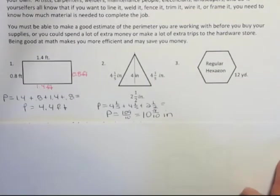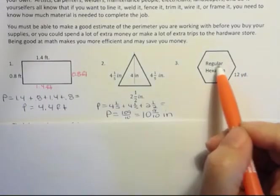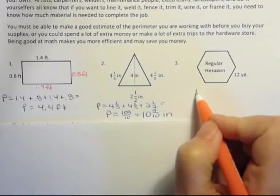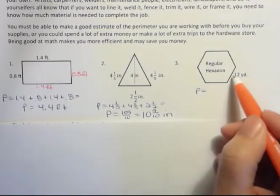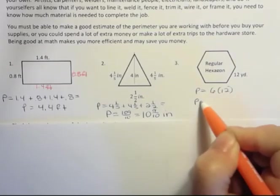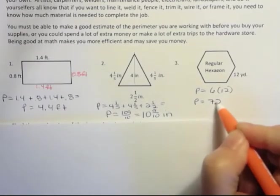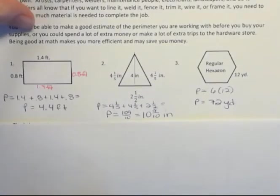All right, the third one: regular hexagon. Well, what do we know about regular? Regular means that all sides are the same. So if they give you one side, then you know all of them. And I could write 12 + 12 + 12 six times, but I know that I could just write it this way too: 6×12. That would be another way to do that. And 6×12 is 72. And then I have yards because again, my units don't change when I'm finding perimeter. They stay the same.